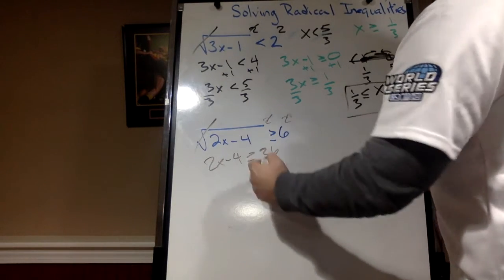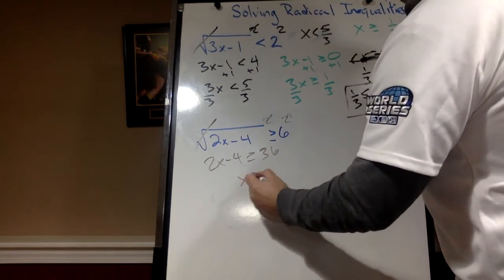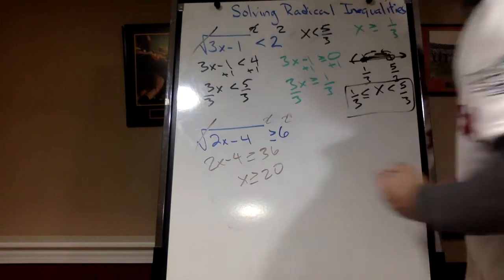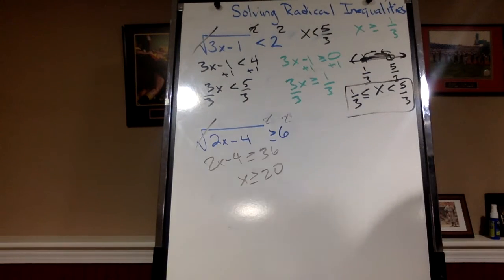Add the 4 is 40. Divide by 2 is 20. x is greater than or equal to 20. I think you guys can handle me skipping the steps.